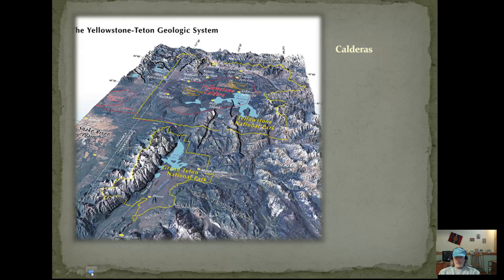Next I want to talk about a caldera. A caldera is a very large depression in a volcano — it's actually the collapse cone of a composite or shield volcano. Not many people know that much of Yellowstone National Park is the very large cone of a volcano. Yellowstone Lake and many of the hot spots are here. Yellowstone National Park is really a volcano waiting to explode. A caldera is the cone that actually collapses in on itself.